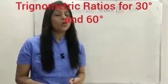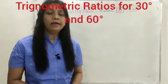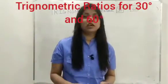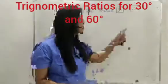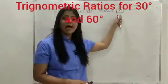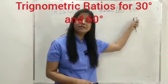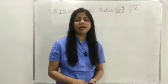Today we will find the 6 trigonometric ratios for the 30 degree angle and 60 degree angle.